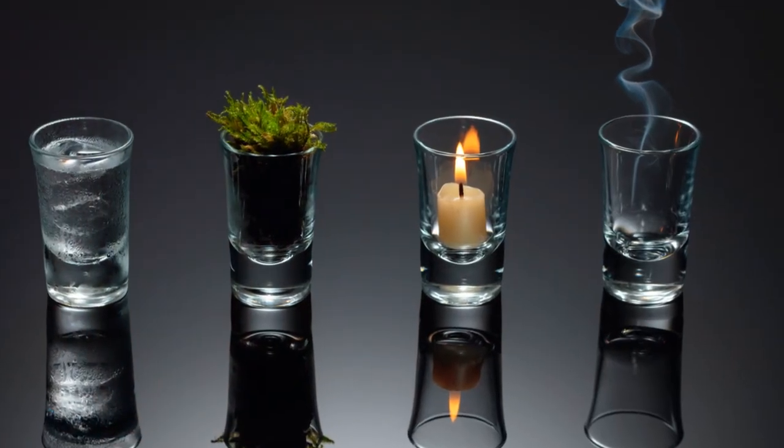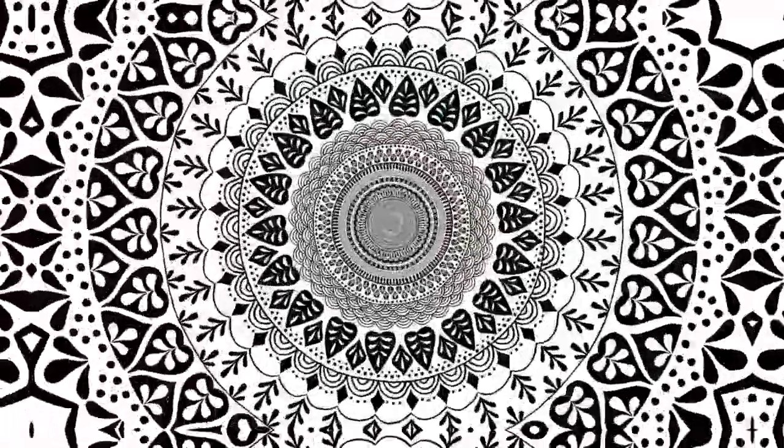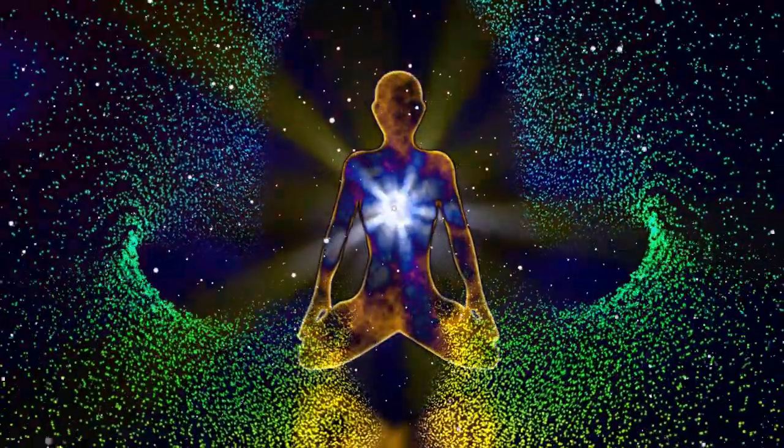Metatron's cube is often seen as a symbol of protection, balance and harmony. Sacred geometry isn't just about beautiful patterns, though. It's also deeply tied to spirituality.